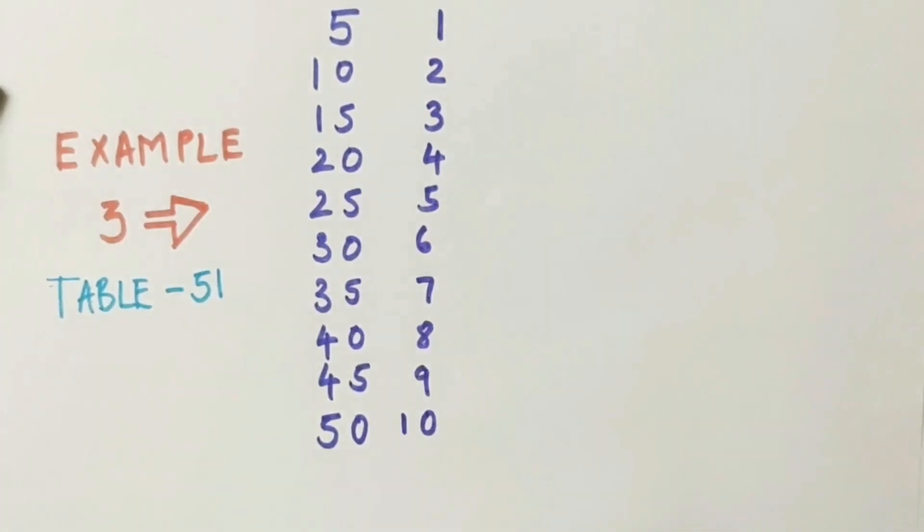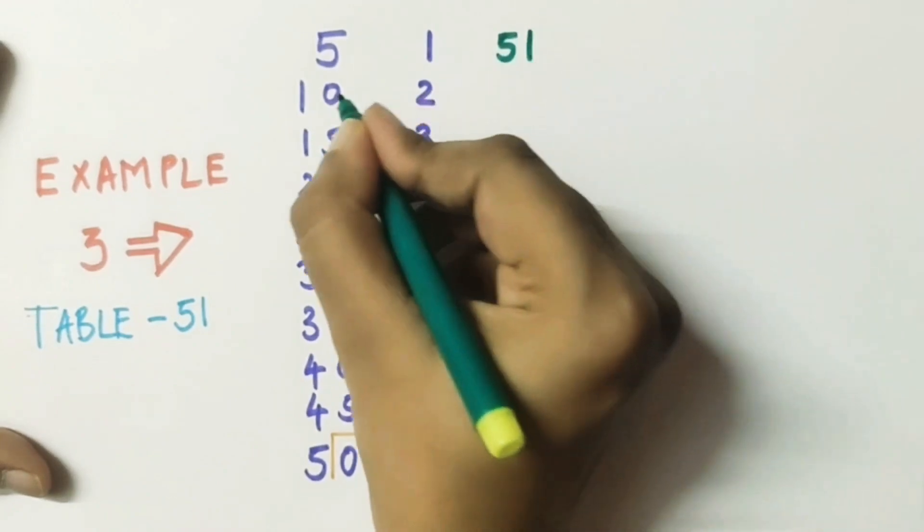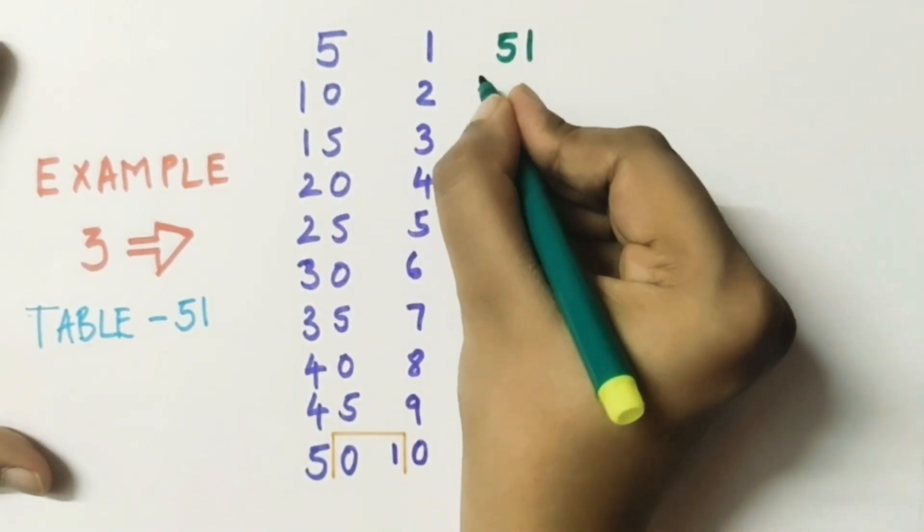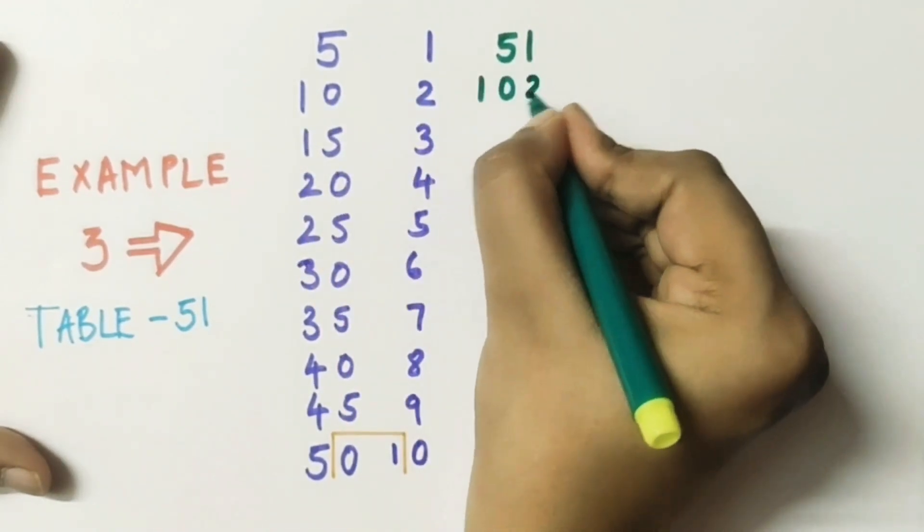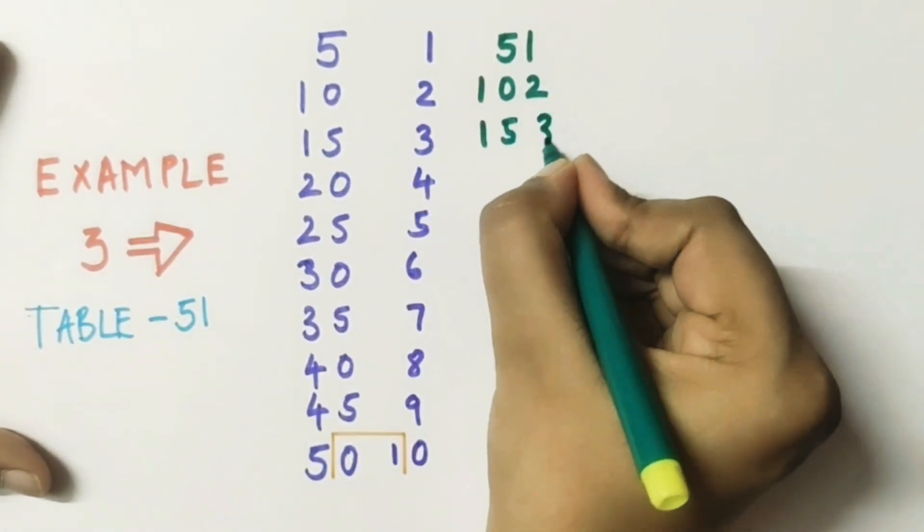Now what you have to remember: when you get 2-digit number in the units place you have to add, but when you get 2-digit number in the tens place you have to write it as it is.